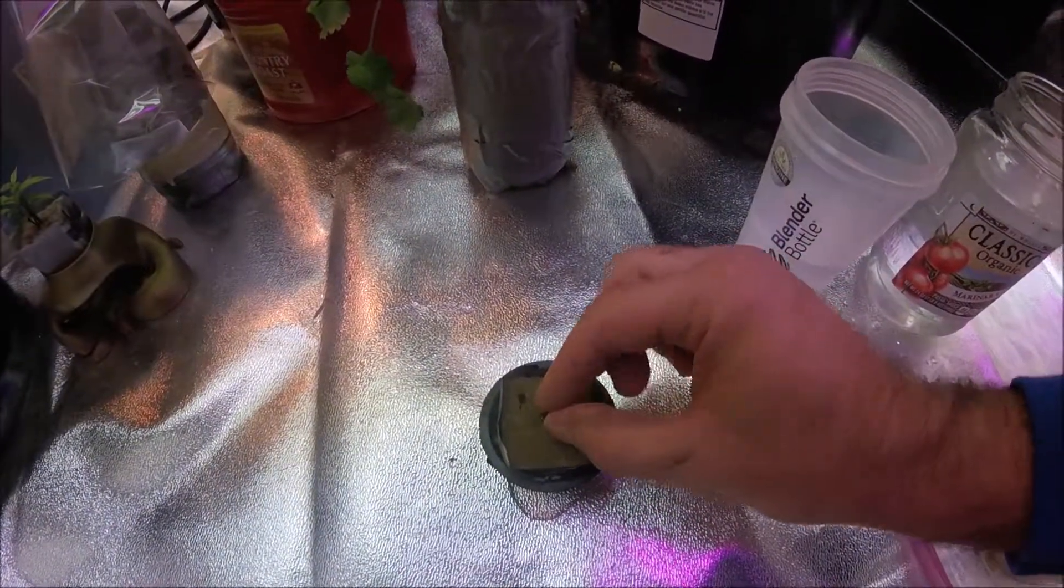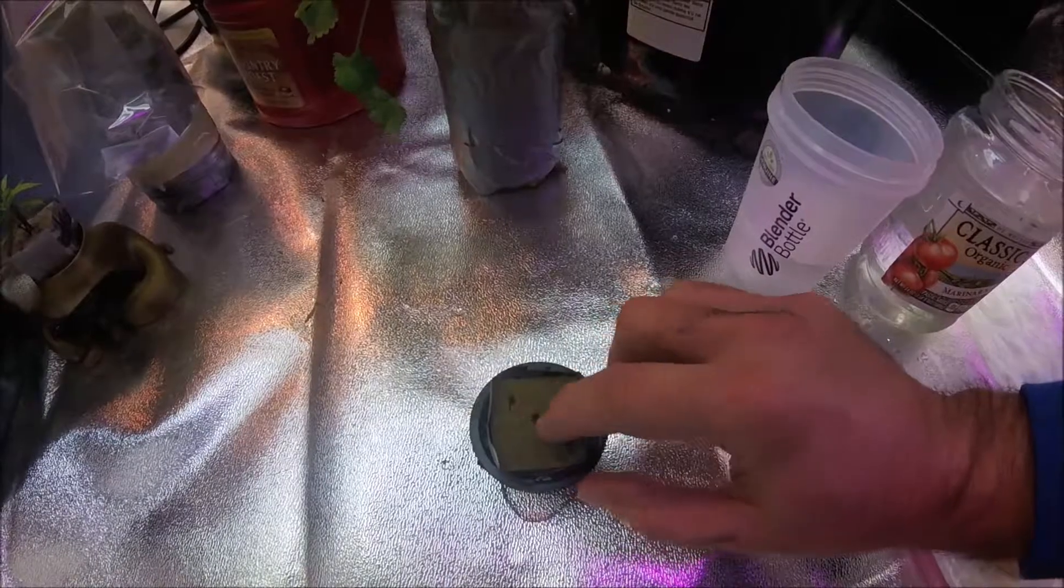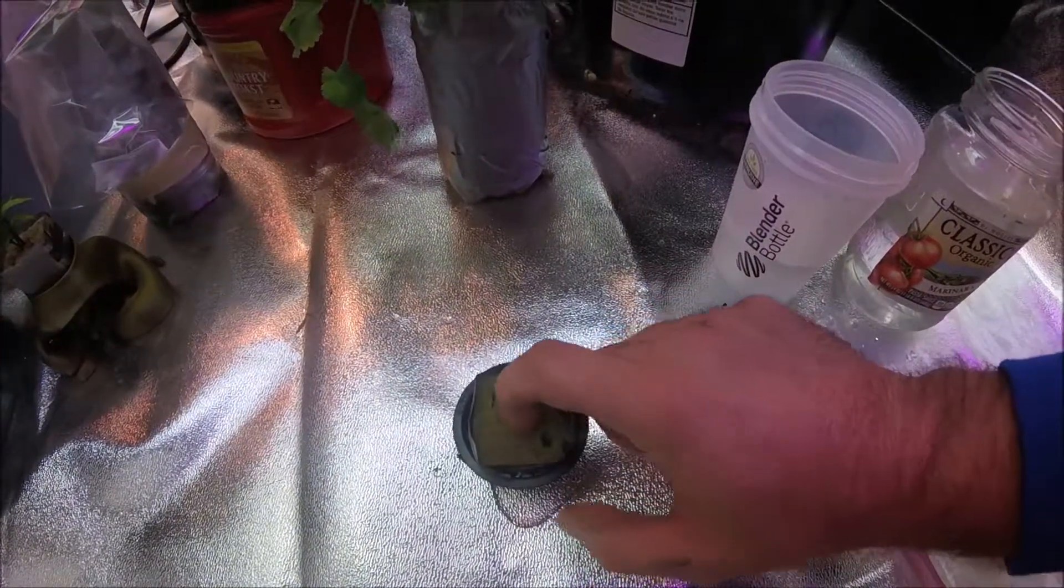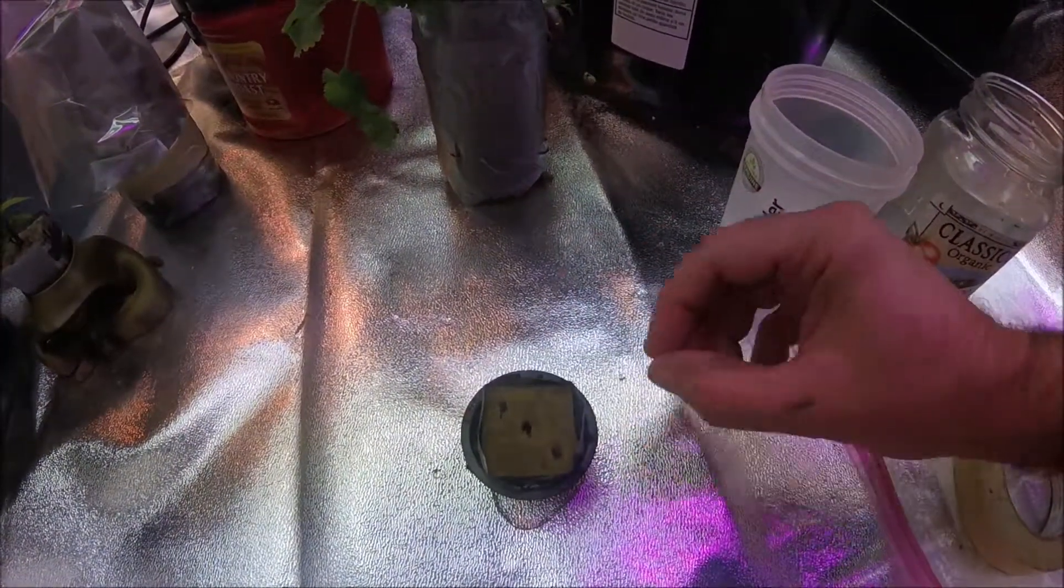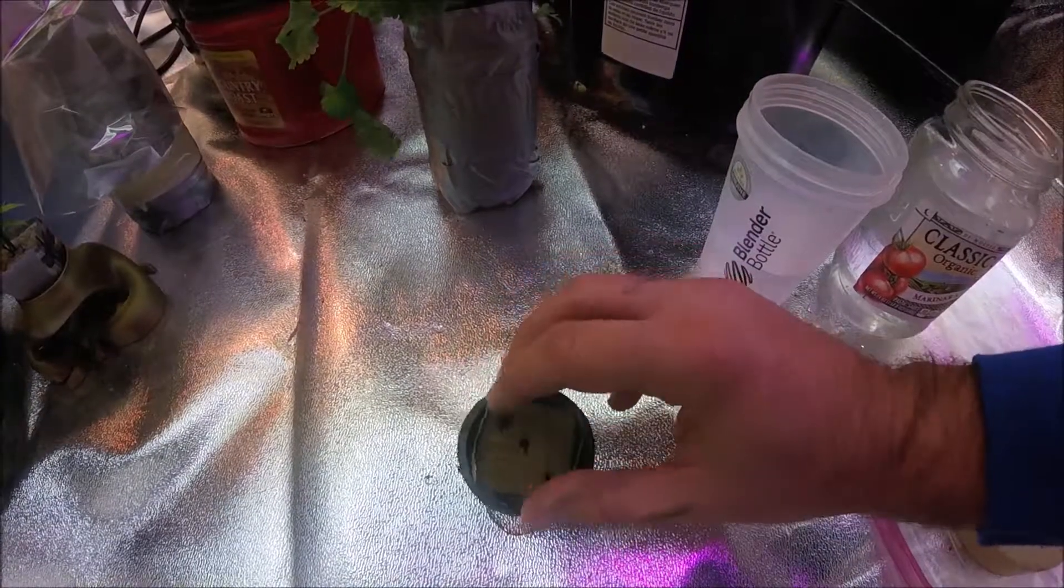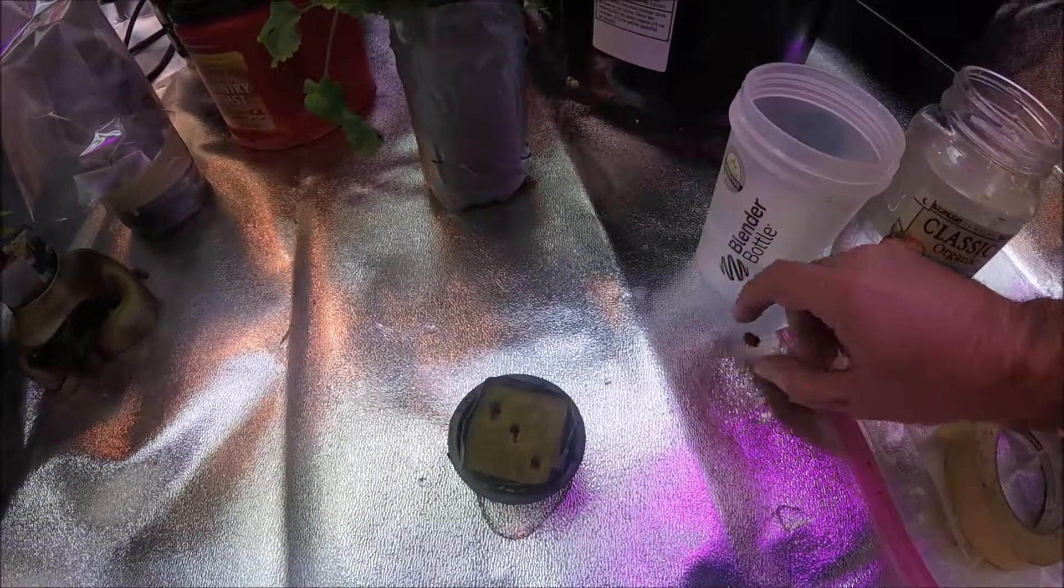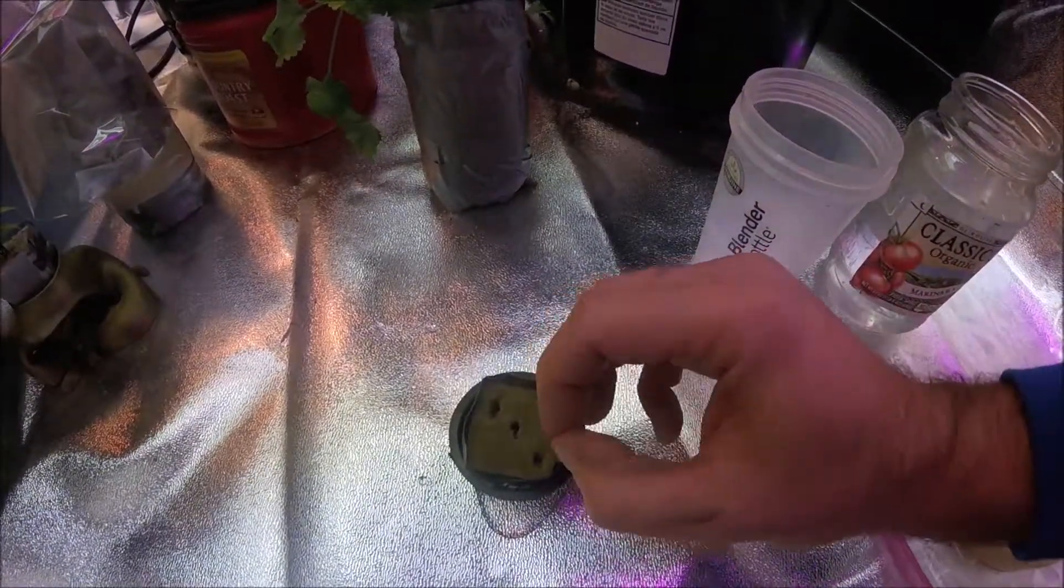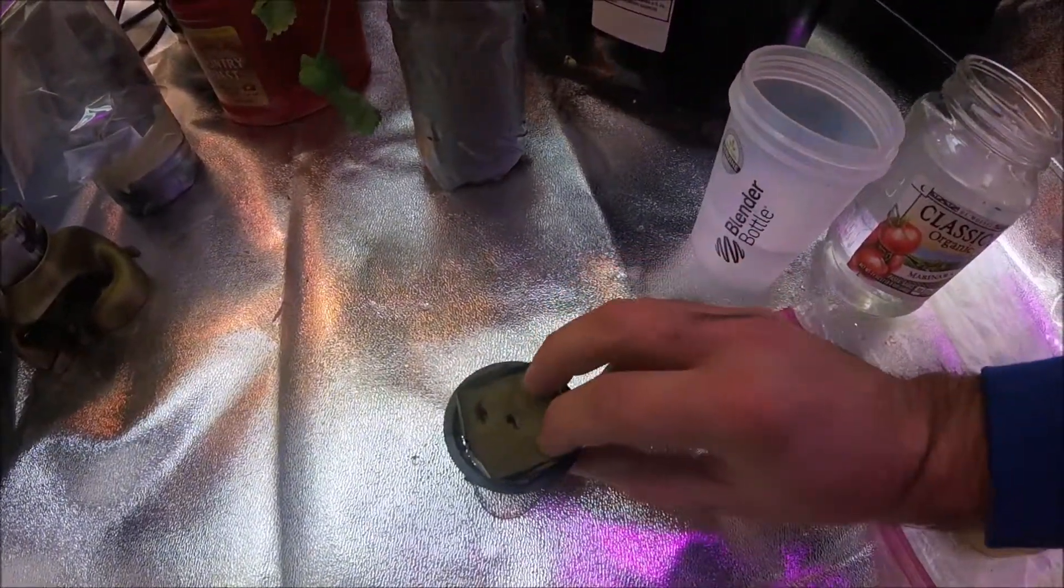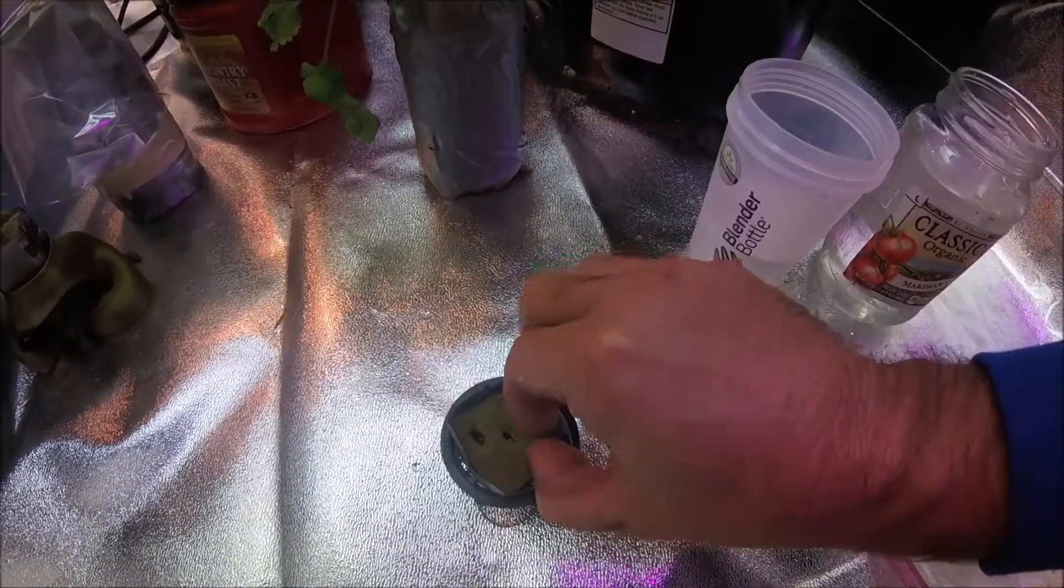So we're gonna go ahead and put this green bean down into the rockwool. Put one in that hole. And I've made a couple extra holes here. Let's go ahead and put that one down in there. Just doing three just to increase our chances of getting something sprouted.